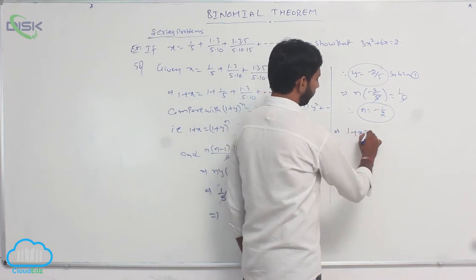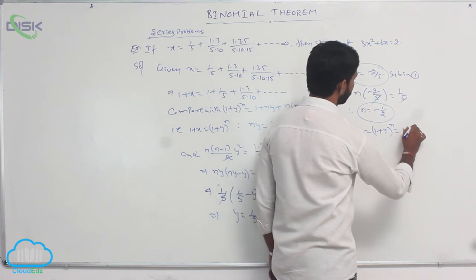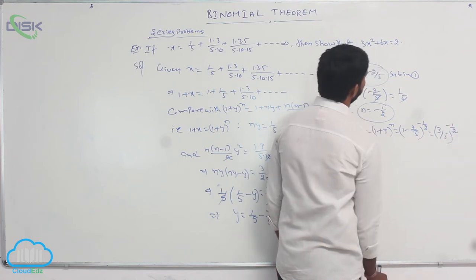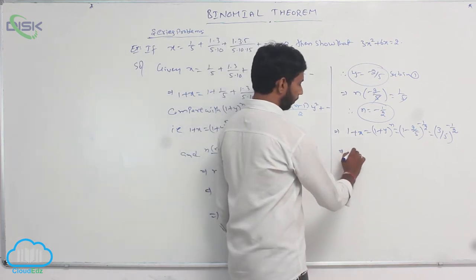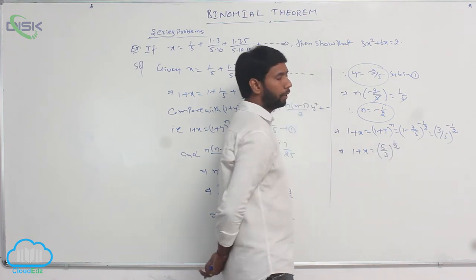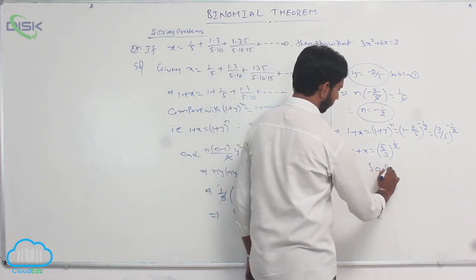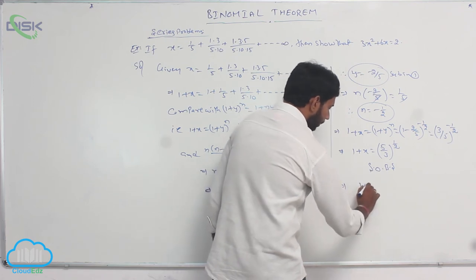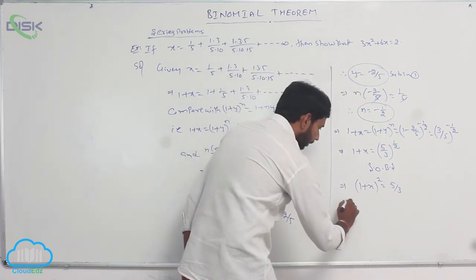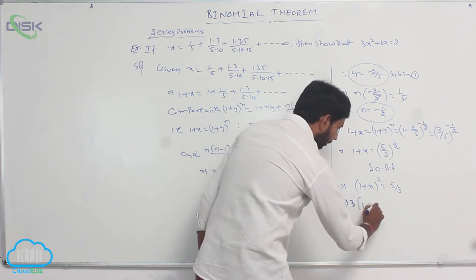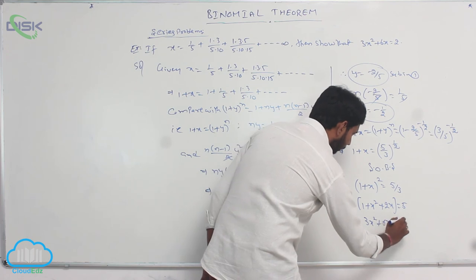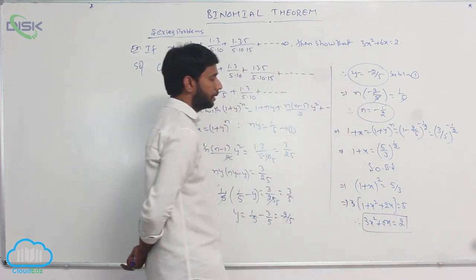It implies 1 + x = (1 + y)^n = (1 − 2/5)^(−1/2) = (3/5)^(−1/2). That implies 1 + x = (5/3)^(1/2). Squaring both sides: (1 + x)² = 5/3. Expanding: 3(1 + x² + 2x) = 5, therefore 3x² + 6x = 5 − 3 = 2. Hence 3x² + 6x = 2.